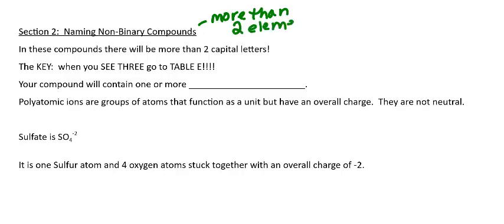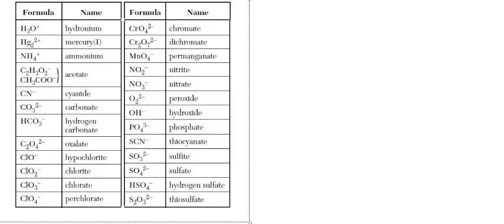The key with this type of compound in this section is: when you see three — meaning three capital letters — turn to Table E. It's like a little rhyme: when you see three, go to Table E. That means your compound contains one of the things on Table E.